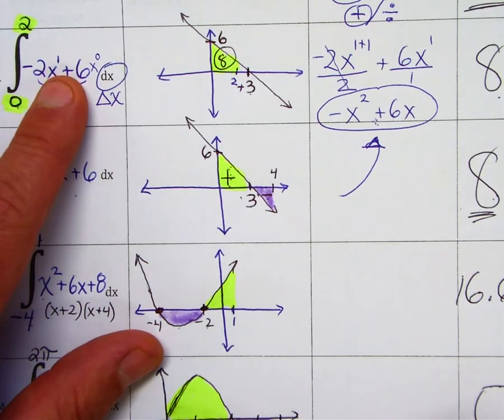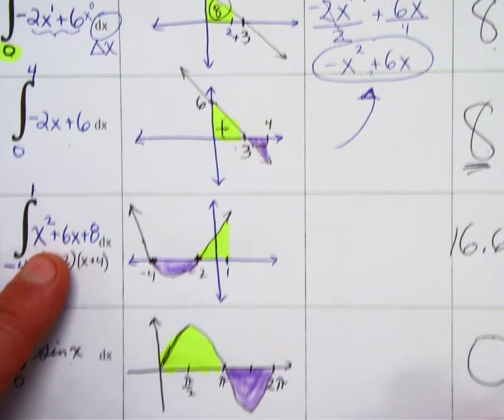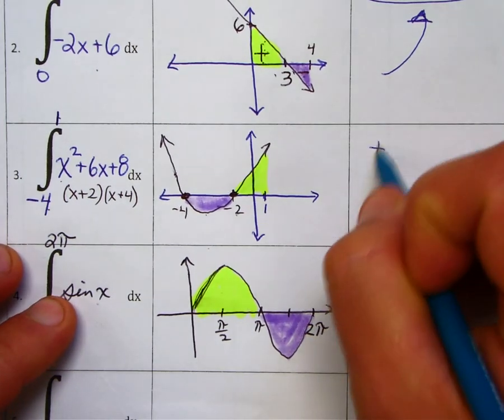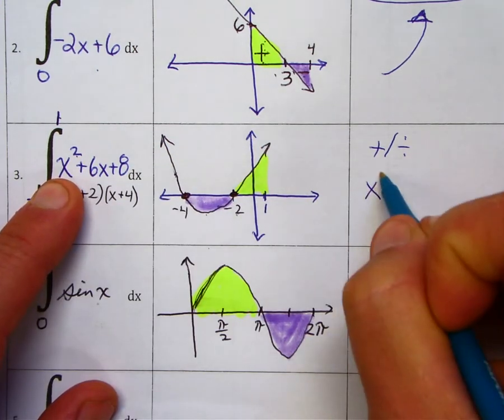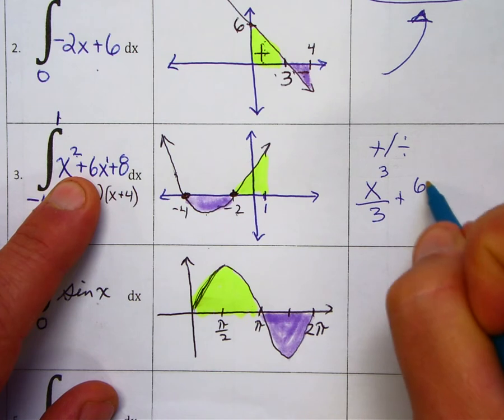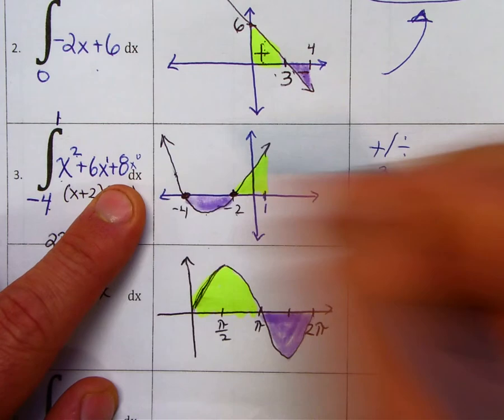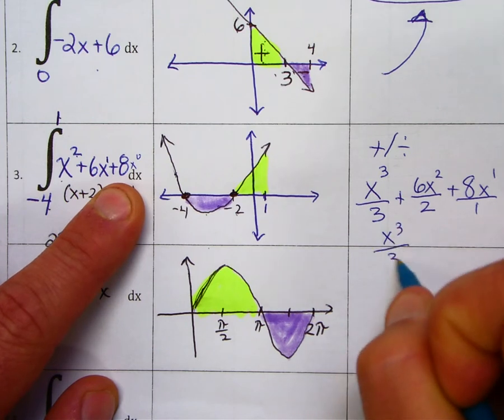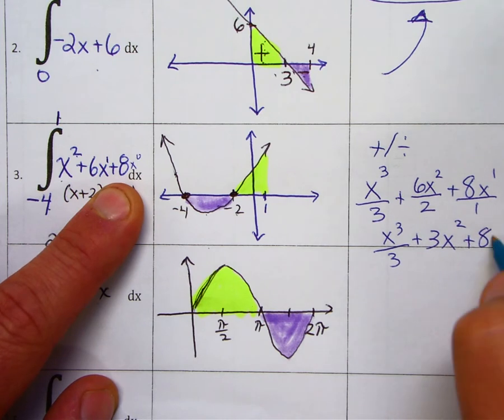Now this is a binomial, so I reversed the derivative two times. This is a trinomial, so I'm just going to reverse the derivative three times. Remember, add and then divide. So here we go. This is a degree 2. 2 plus 1 is 3. Divide by that 3. This is degree 1. 1 plus 1 is 2. Divide by that 2. This is x to the 0. And after I clean this up, I get this.